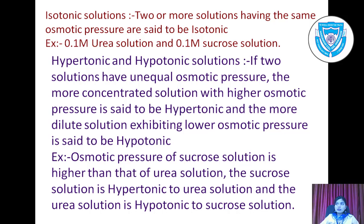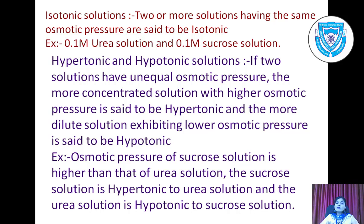From osmosis, we derive some concepts. Isotonic solutions: two or more solutions having the same osmotic pressure are said to be isotonic with each other — for example, 0.1 molar urea solution and 0.1 molar sucrose solution. Hypertonic and hypotonic: if two solutions have unequal osmotic pressure, the more concentrated solution with higher osmotic pressure is hypertonic, and the more dilute solution with lower osmotic pressure is hypotonic.